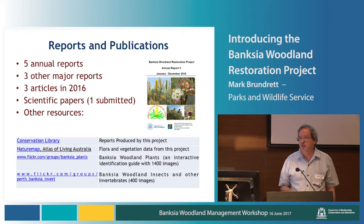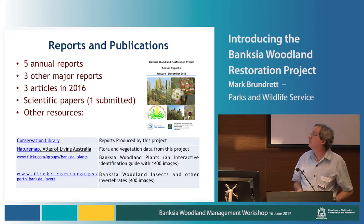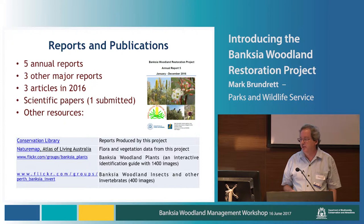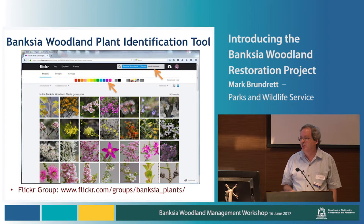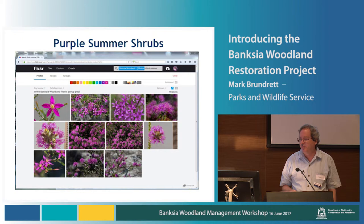If you want to find more about the projects, we have a series of annual reports and a number of other major reports available. We're now starting to publish articles in community newsletters to provide short versions of everything, and we're also starting to publish scientific papers which provide a more detailed approach. Our plot data is available through the Atlas of Living Australia and NatureMap. We have websites to help people identify plants, including a Banksia Woodland Plant website which is a Flickr site where you can filter by shrub, color, and flowering time. We're also accumulating information about the commonest invertebrates in our banksia woodland areas.